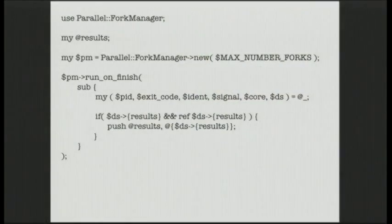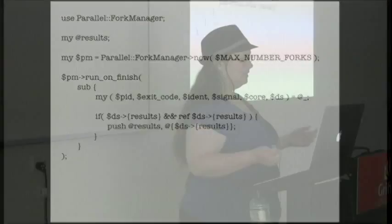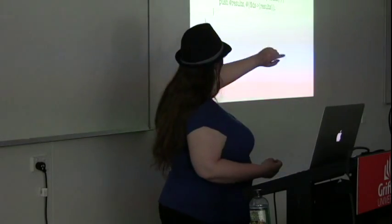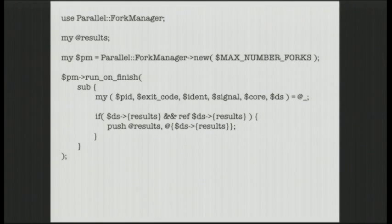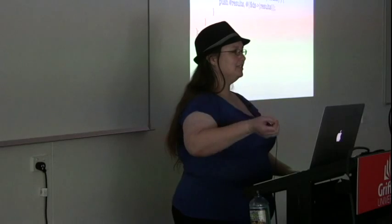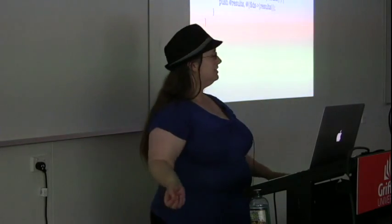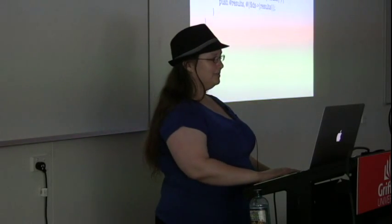We can set callbacks through the fork manager to handle things when a child process finishes. run_on_finish allows us to access the process ID the child had, its exit code, any identifier, the signal that killed it if applicable, whether it dumped core, and most interestingly - the data structure it returned. So children can return data structures and we can unpack them. If the result is a reference, hopefully it's an array - push that onto our results array. There are ways you'd want to do more error checking here, but cases where a child finishes cleanly and you don't get your data structure back are few and far between.